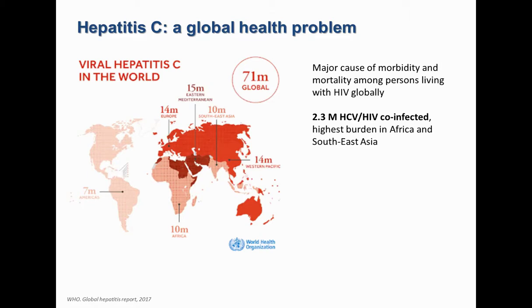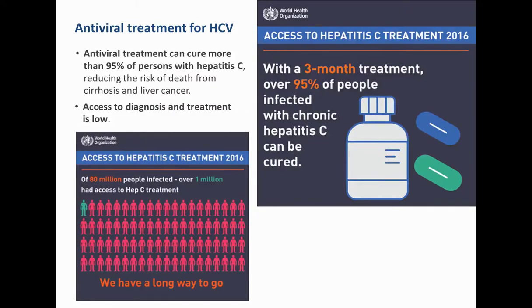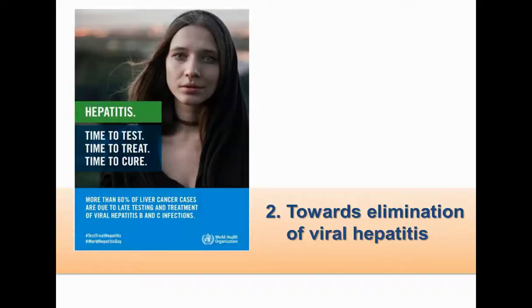Due to shared modes of transmission with HIV — mainly through exposure to infected blood — HCV is also a major cause of morbidity and mortality in people living with HIV globally. Chronic hepatitis C is often undiagnosed because symptoms may develop decades after infection, presenting as advanced liver disease associated with cirrhosis or liver cancer. Over the last years, several direct-acting antivirals (DAAs) have been developed that can cure hepatitis C in almost all patients with a short, well-tolerated oral regimen. However, access to diagnosis and treatment remains low.